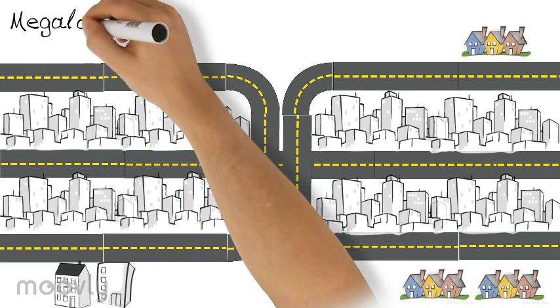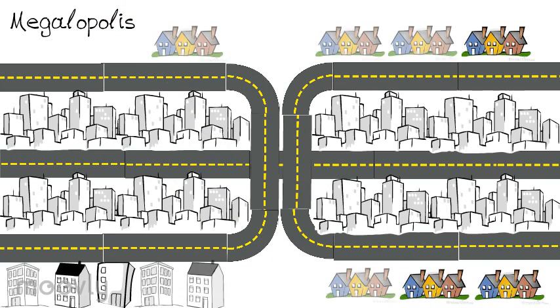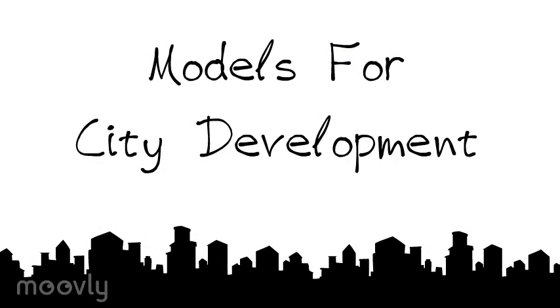After cities, a megalopolis is formed. Megalopolises have large populations and incorporate large areas. They are usually focused around one large city. The central city and the suburbs border each other, with the suburbs being dependent on the city.